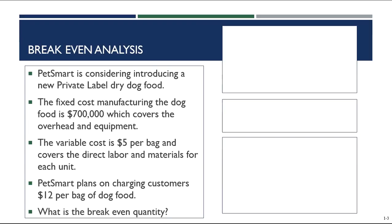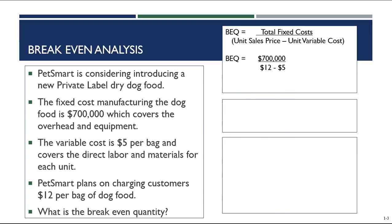The first thing we need to do is determine that breakeven quantity. The breakeven quantity is based on fixed cost, the sales price, and the variable cost. So the equation is: fixed cost divided by (sales price minus variable cost). Plugging in our information: $700,000 divided by ($12 minus $5), which is 7. $700,000 divided by 7 means we need to sell 100,000 bags of dog food in order to break even — that is, to make $0 in profit.